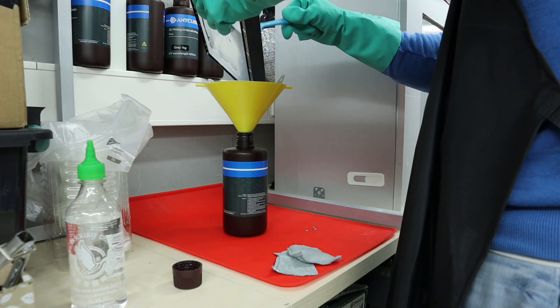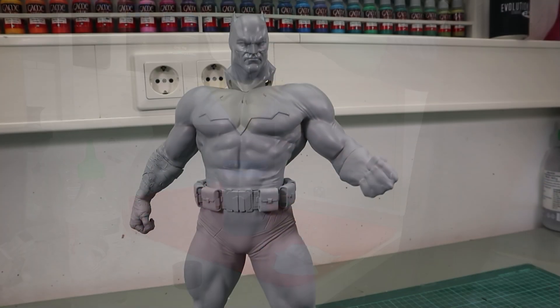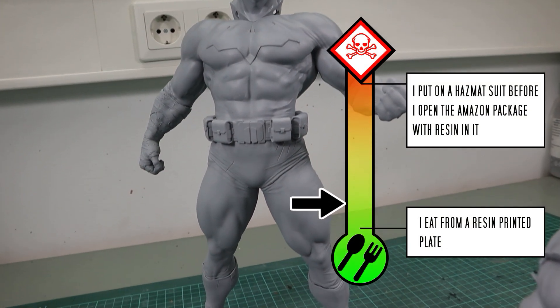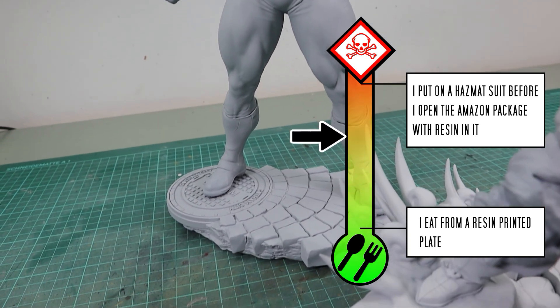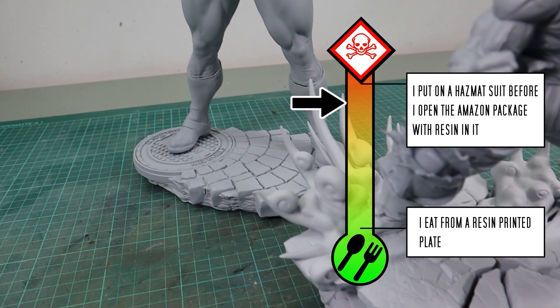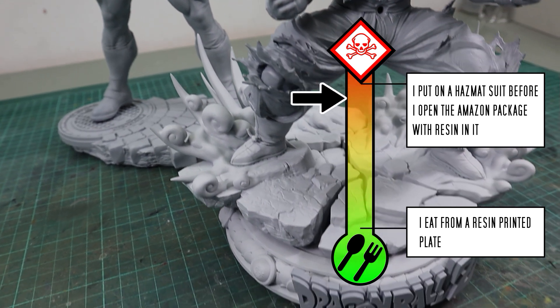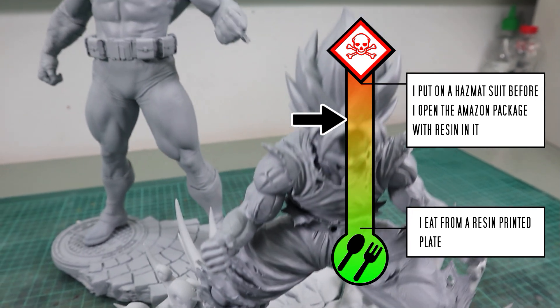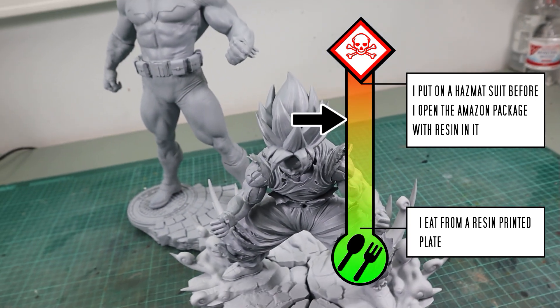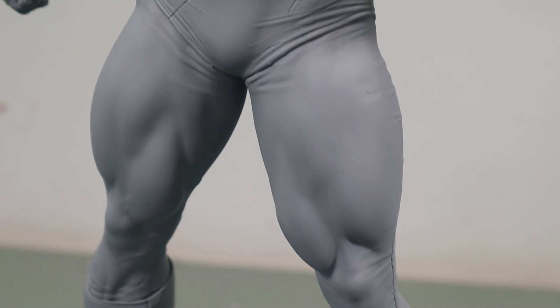Now I would like to know from you: where would you place yourself on the resin precaution scale? From someone casually eating off a resin printed plate to someone suiting up with a hazmat suit before opening an Amazon package with resin in it. Let me know in the comments. I'm probably around here - I rather take too much than too little precaution.